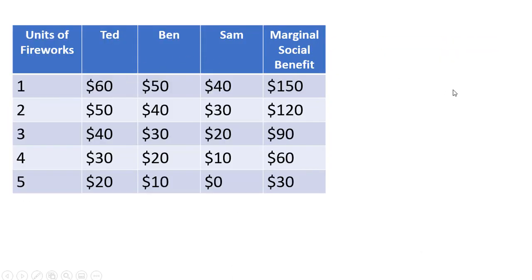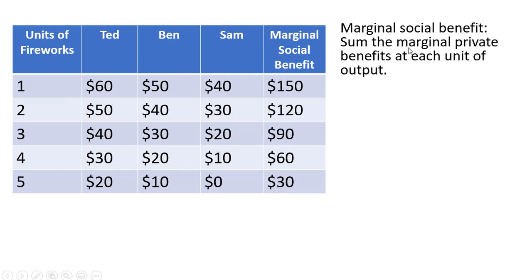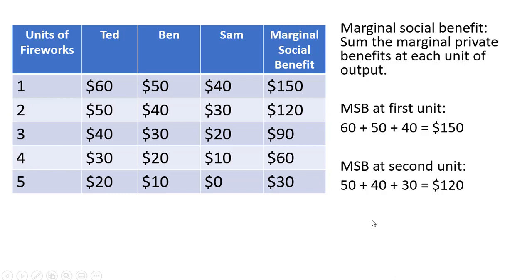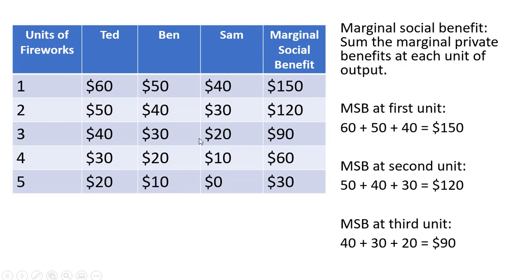To get the marginal social benefit, we sum up the marginal private benefits at each unit of output. For the first firework: 60 plus 50 plus 40 gives us $150. For the second unit: 50 plus 40 plus 30 gives us a marginal social benefit of $120. For the third unit: 40 plus 30 plus 20 gives us $90. We can do the similar thing for the fourth and fifth unit.